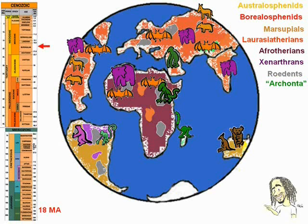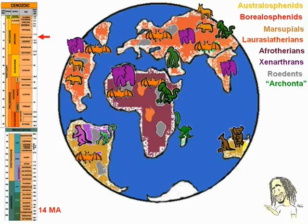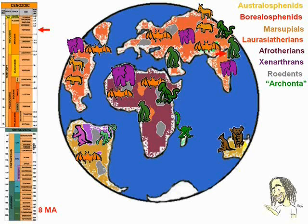Around 10 million years ago, the Old World monkeys crossed Asia, arriving at Japan. Bats came flying to South America. 8 million years ago, the tailless apes dispersed to Africa, where they'll originate gorillas, chimps, and humans, and to the east of Asia too, where they'll originate the orangutans and gibbons.